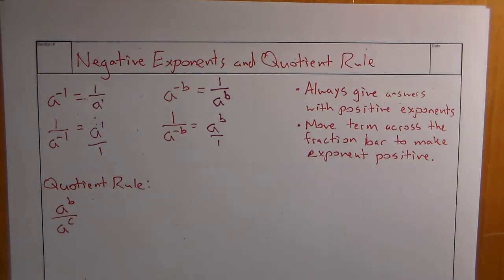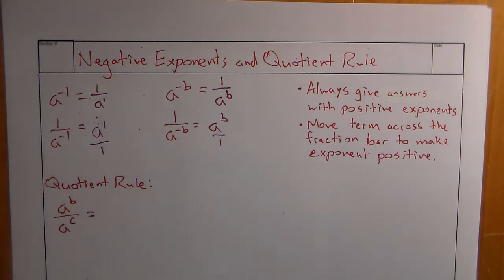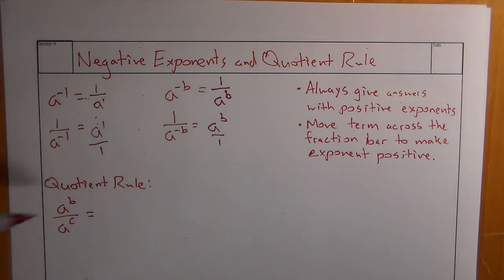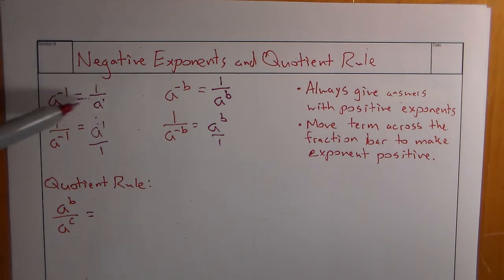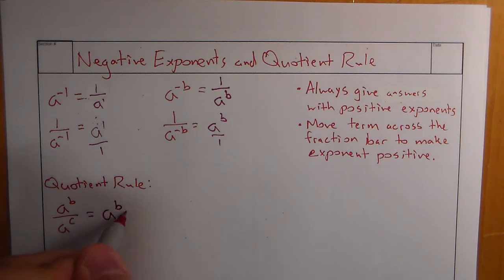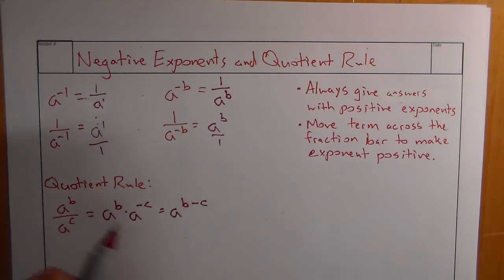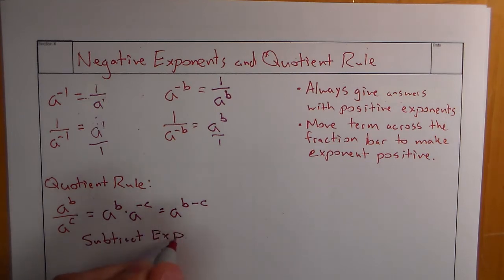The other thing we have to look at is the quotient rule. The quotient rule is similar to the product rule — when multiplying separate terms, we added the exponents. For the quotient rule, think of moving a to the c up; it becomes a negative exponent. If we then follow the product rule, we get a to b minus c. That's actually what we do — we subtract exponents. So any time it's a quotient rule, subtract the exponents.